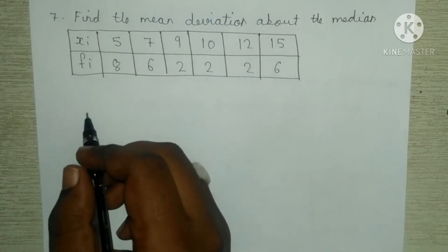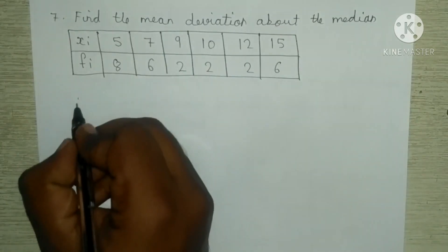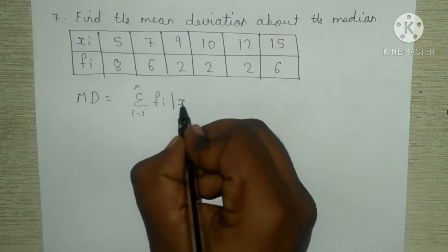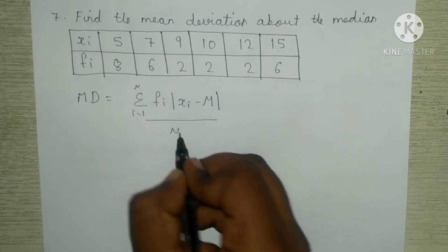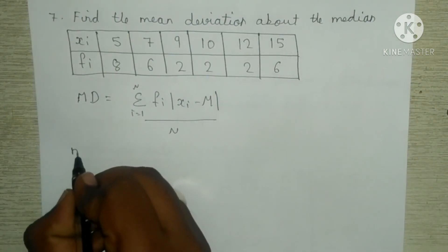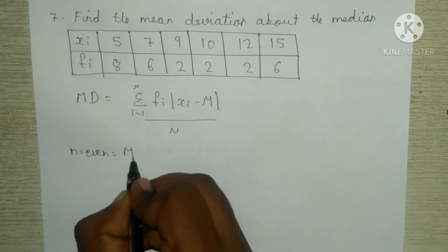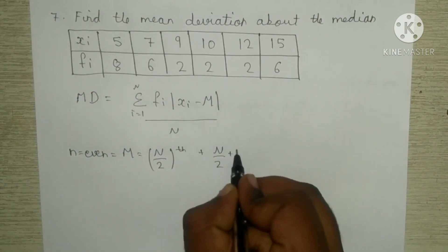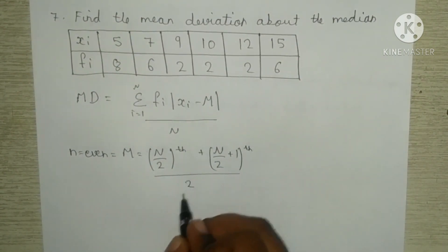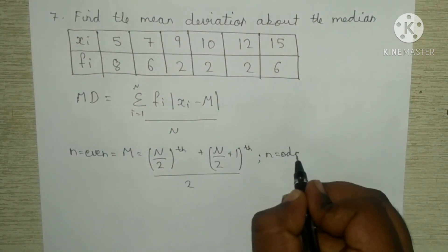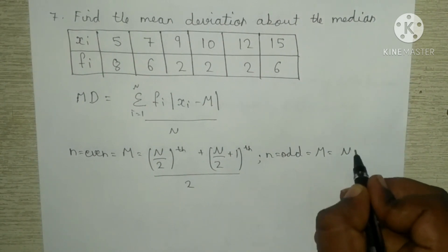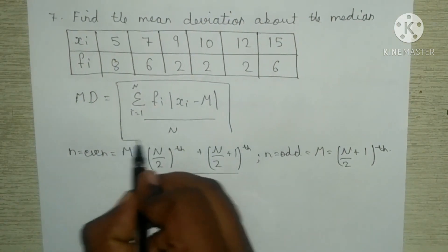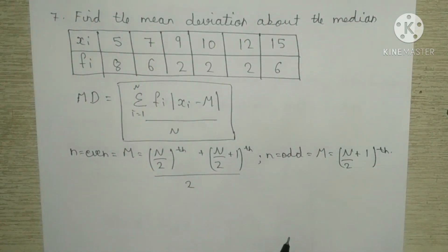For the seventh question — find the mean deviation about the median, where x and f are given — the mean deviation formula is MD = summation from i = 1 to n of f_i × |x_i minus M|, all divided by n. For the median: when n is even, M = (n/2-th term + n/2+1-th term) / 2; when n is odd, M = (n+1)/2-th term. These two formulas are used in the seventh question.